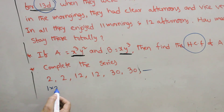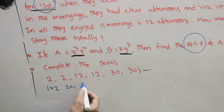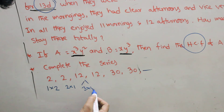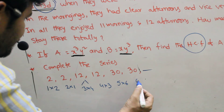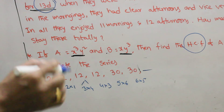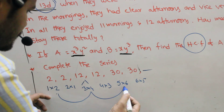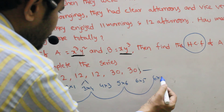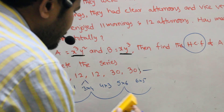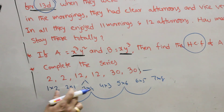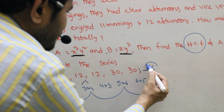How do you write 2? It's 1 times 2. The next 2 is 2 times 1. Next 12 is 3 times 4. Next 12 is 4 times 3. Next 30 is 5 times 6. Next 30 is 6 times 5. Observing the pattern: 1×2, 3×4, 5×6, next is 7×8. So the answer is 56.